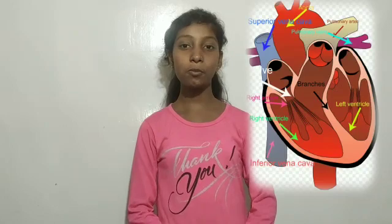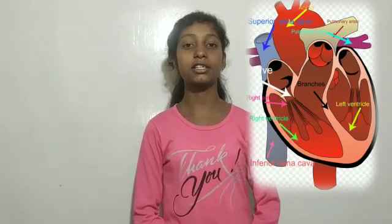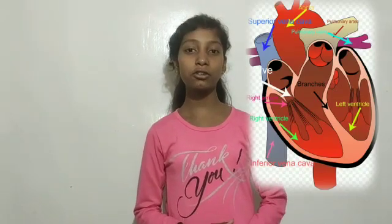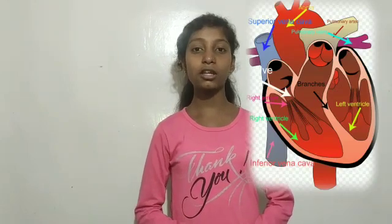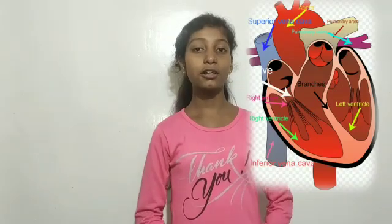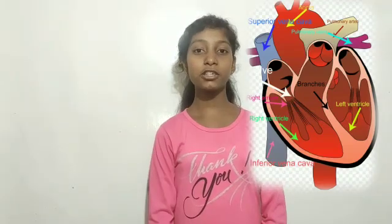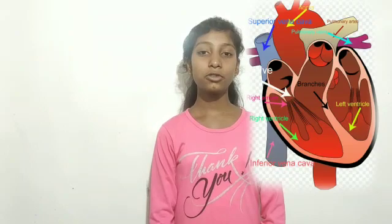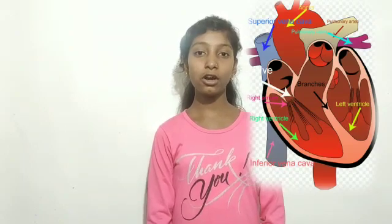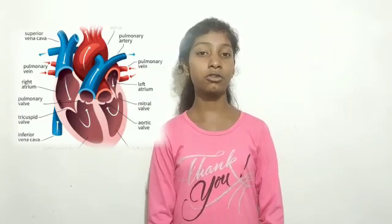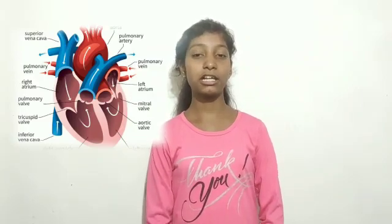It protects our heart from shock and desiccation. Our heart has 4 chambers — 2 upper chambers called auricles and 2 lower chambers called ventricles. The auricle is called the receiving chamber and the ventricle is called the pumping chamber. The valve between the right auricle and right ventricle is called the tricuspid valve, and the valve between the left auricle and left ventricle is called the bicuspid valve.